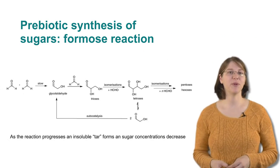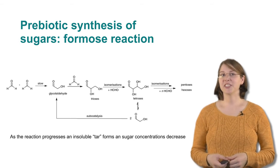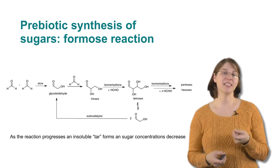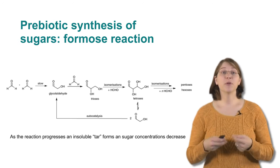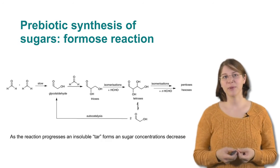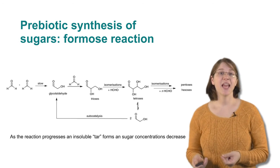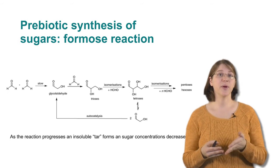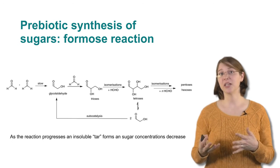Sugars can be made prebiotically through what is called the formose reaction. It's called the formose reaction because we take these small organic formaldehydes and we react them together to make larger and larger carbon units. So formaldehyde was possible on early earth through the reaction of carbon dioxide or carbon monoxide with hydrogen gas. And by reacting these together in water, you end up with larger and larger sugar chains, five carbon or six carbon sugars.